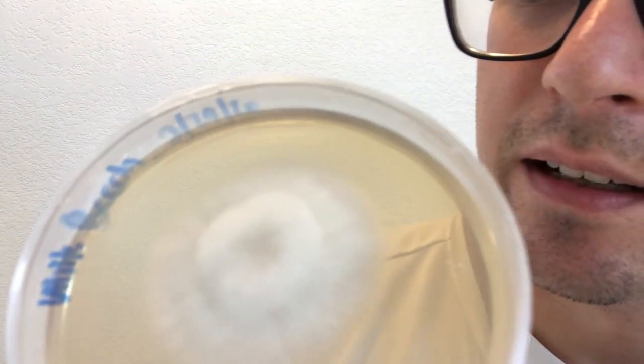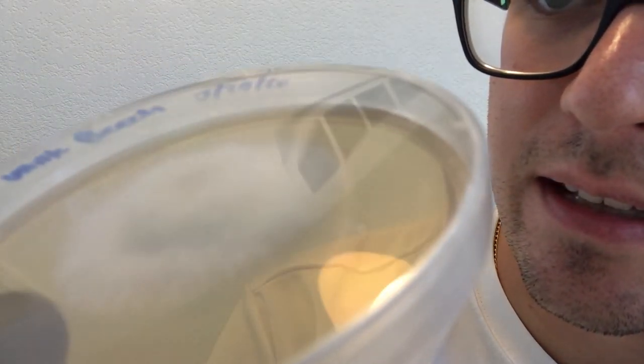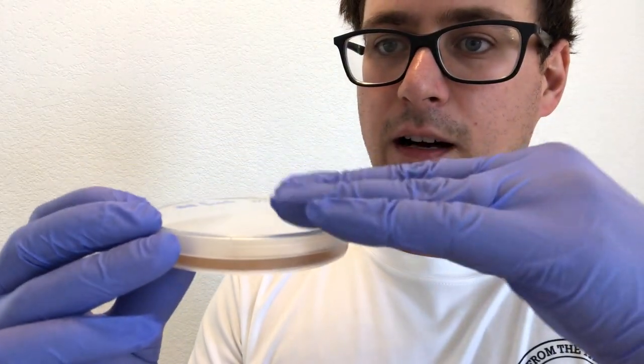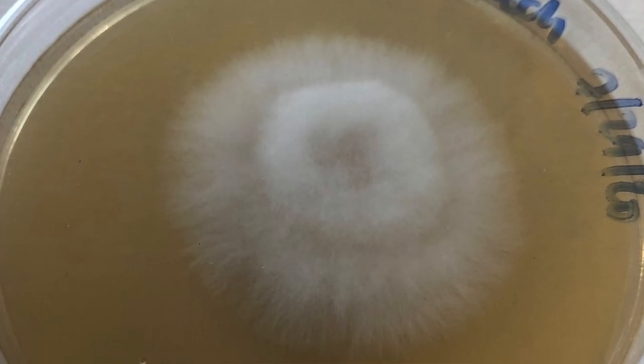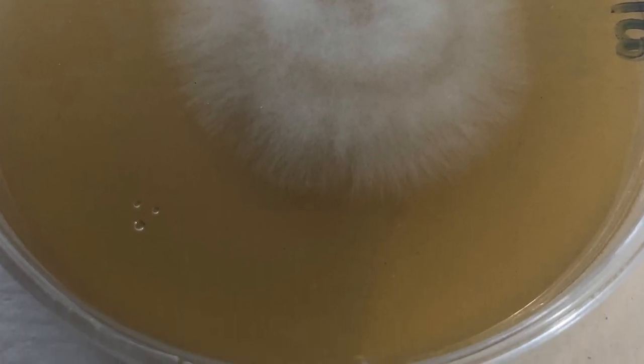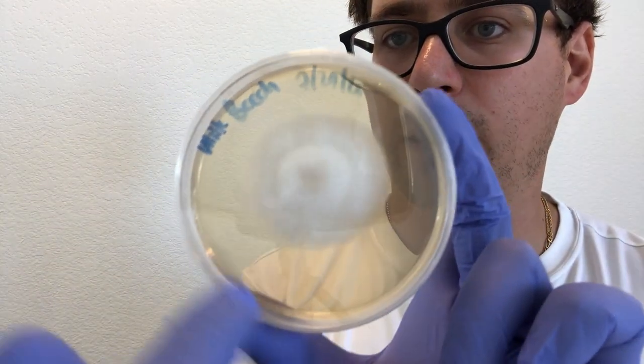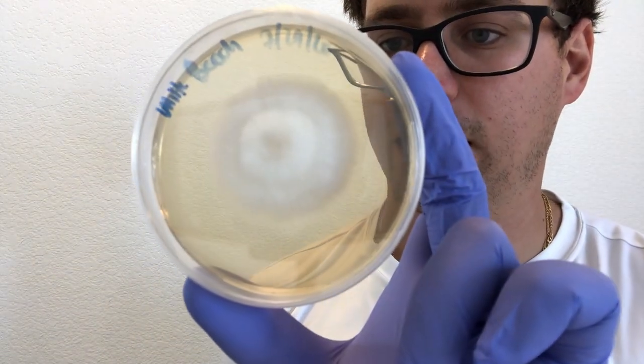Now we've got a beech mushroom here. Look at how raised this mycelium is. Beech mushrooms are really raised, and you can see that on this plate here—nice white and healthy. As I'm going through my petri dishes, I'm paying attention to the perimeter of the mycelium, making sure that there's no contaminants showing.